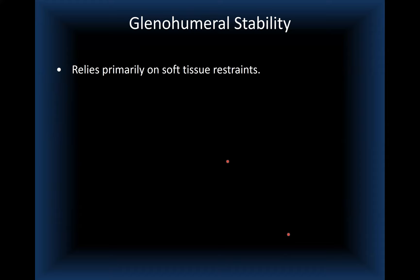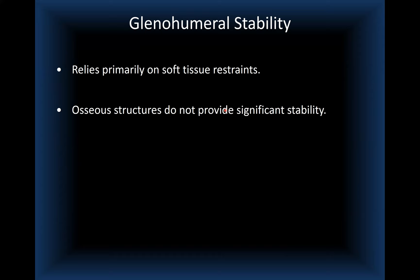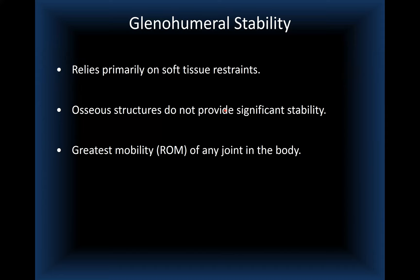The stability of the glenohumeral joint relies primarily on soft tissue restraints. The osseous structures, in contrast to the hip, do not provide significant stability. The glenohumeral fossa is not as deep as the acetabular fossa. The relationship between the humeral head and glenoid provides the greatest range of motion of any joint, but paradoxically makes it the most unstable joint in the body.